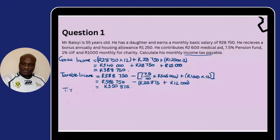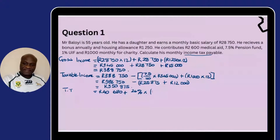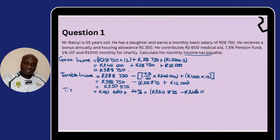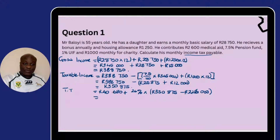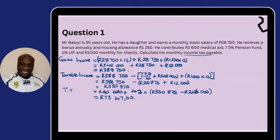Applying the tax tables: it's R40,680 plus 26% multiplied by the difference between our taxable income of R350,875 minus R226,000. When we solve this bracket — R40,680 plus 26% of that difference — we get R73,147.50. This is the tax we are supposed to pay before further deductions.